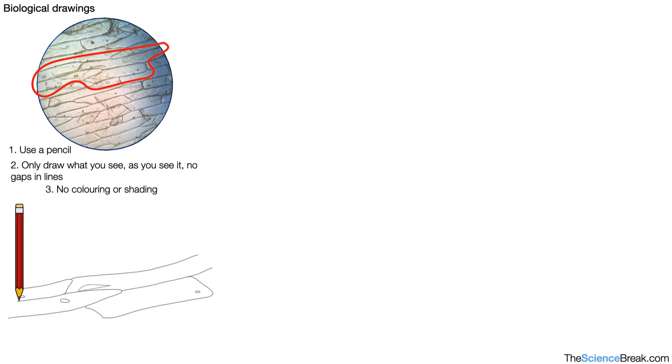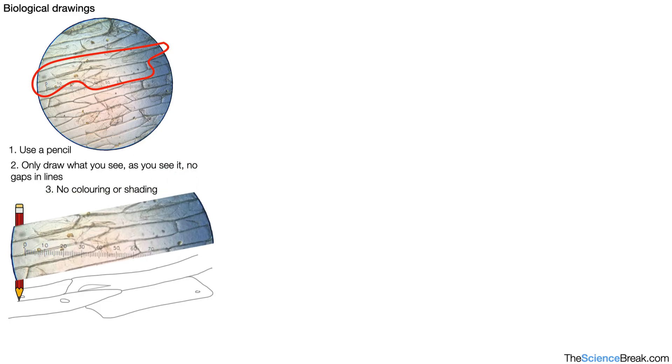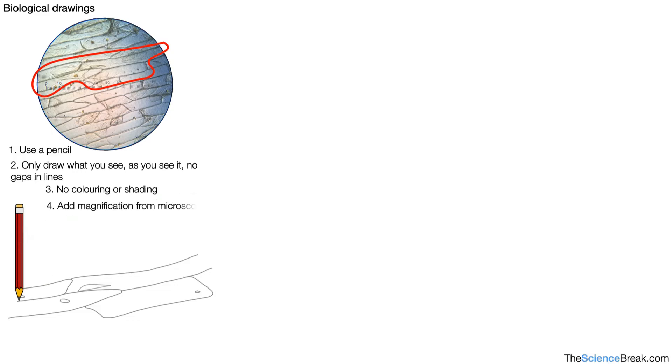We make sure there's no coloring or shading. So you can see these are the cells I've drawn and I've drawn them as well as I can in terms of what I see as I see it. Number four, we add the magnification from our microscope. So in this case it's times 400. And then we would add labels. We have our cytoplasm. We have our cell wall. And we have a nucleus of one of the cells.